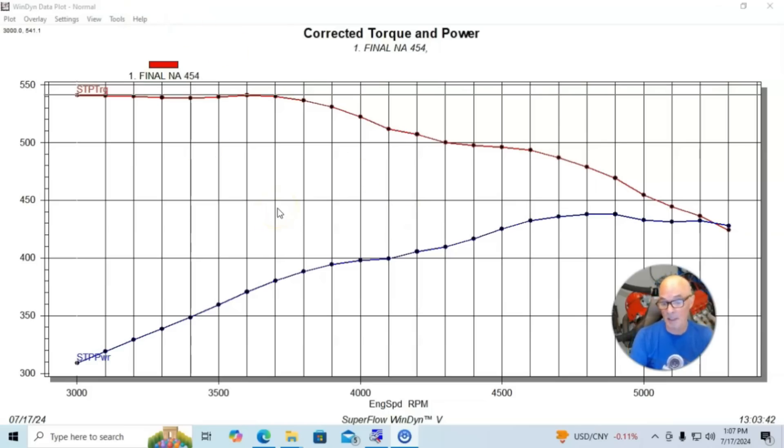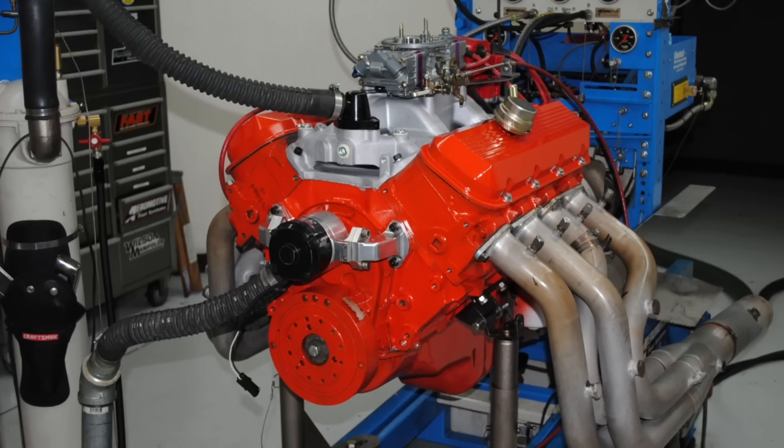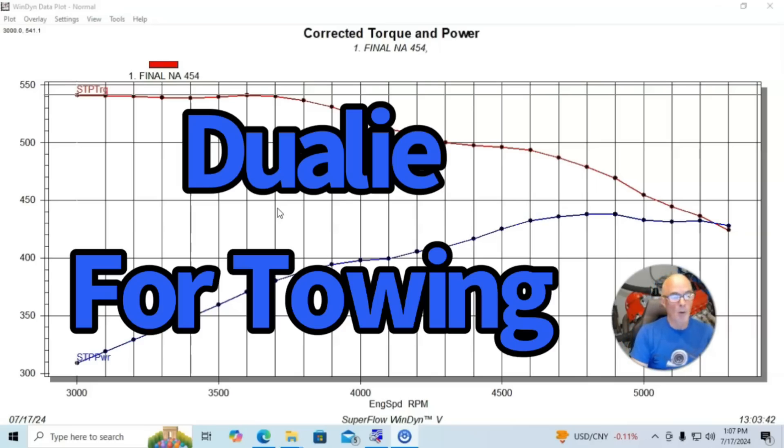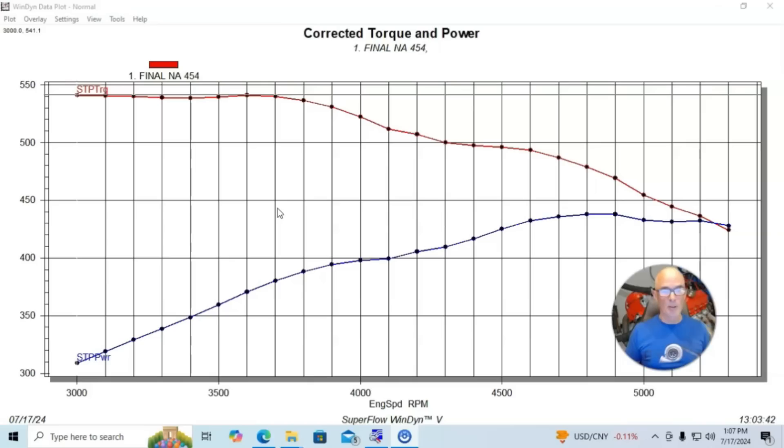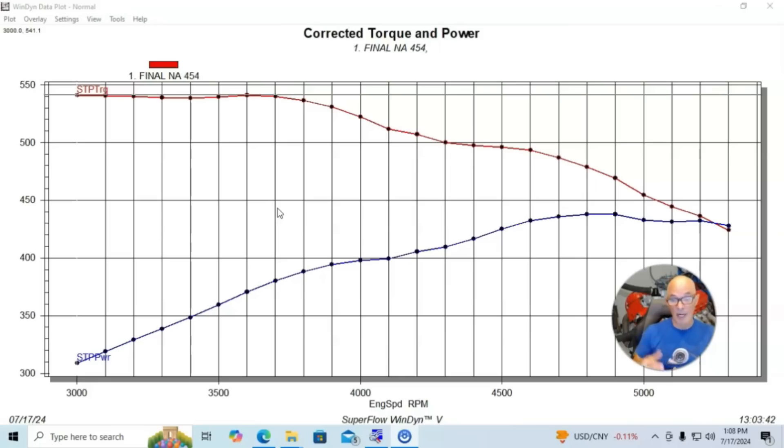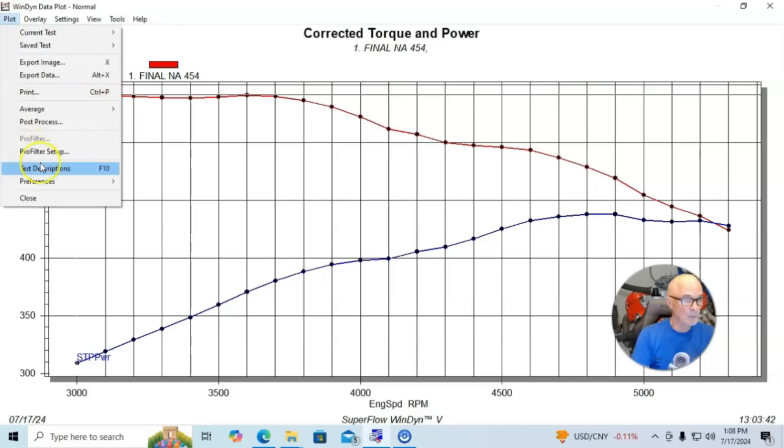Our starting motor was basically a rebuilt 454. This was a Mark 4 motor, so an early one, not a Gen 5 or a Gen 6. This one was in a 77 crew cab dually that we used for towing. It had a turbo 400 and a 4 series rear end, so it was not an overdrive.